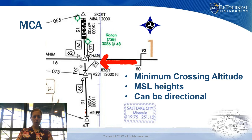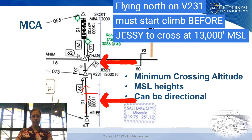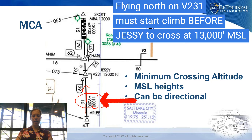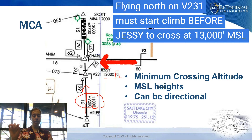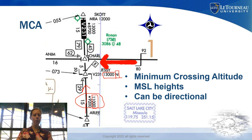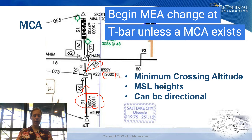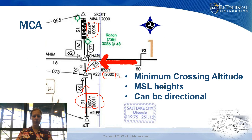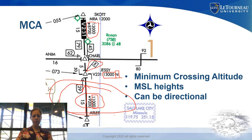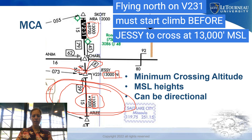The MCA is shown with an X flag, as in this example at Jesse Intersection. If heading north on Victor 231, you could be at 11,000 feet receiving nav aids and ATC communication without issue. However, as you approach Jesse Intersection, the MCA requires that you begin your climb early so that you are at 13,000 feet by the time you cross Jesse. Without the MCA indicated by the X flag, you would simply begin your climb at the T-bar. Because Jesse has the MCA, you must plan to reach 13,000 feet at that intersection.